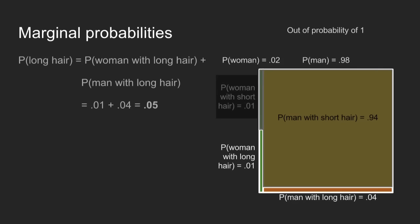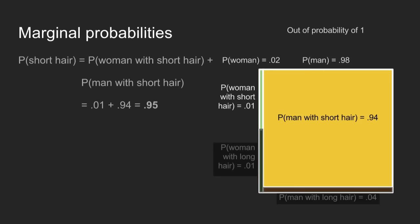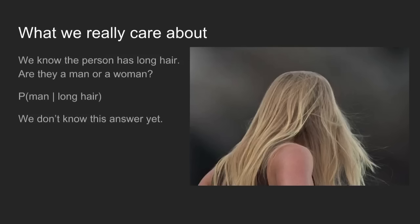Finally, concept three: marginal probabilities. If I want to find the probability that someone has long hair, I just add up all the different ways someone can have long hair. They can be a woman with long hair or a man with long hair. In the men's restroom line, that's 1% plus 4%, or 5% overall. The same for short hair gives 95%. This last concept finishes our foundation — we can now get to what we really care about.